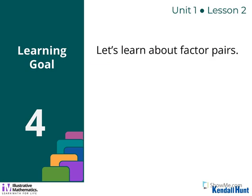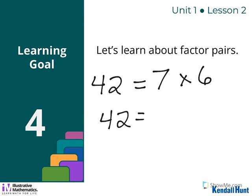Let's learn about factor pairs. I think you guys already know factor pairs because as you've been finding area, you've been finding factor pairs. So if I have a number like 42, one set of factor pairs could be seven times six. We could also do 42 times one.